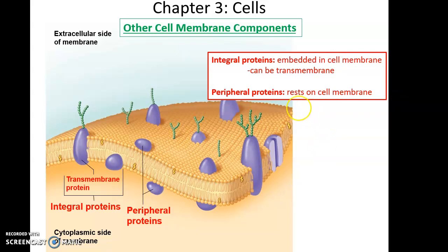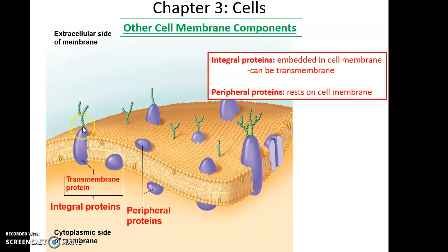There are other components very important to the function of the cell membrane. For instance, there are many proteins associated with the cell membrane. You have a few different categories: integral proteins, which are embedded in the cell membrane either partially or passing all the way through. Proteins that pass all the way through are also called transmembrane proteins because they cross the membrane. Then there are peripheral proteins, which rest on the surface of the cell membrane and are not embedded in it.